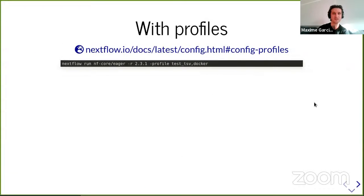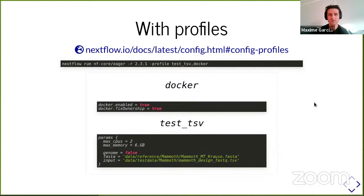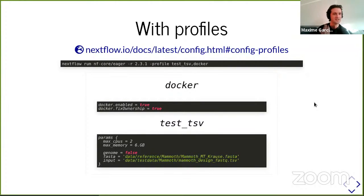The whole beauty about Nextflow is I can also use profiles to do the same thing. I can still have a look at the docs to see how it works. But basically, profiles are like aliases for configs. So here I'm using two profiles at once: a test TSV profile and a Docker profile. The Docker profile will get all the information for Docker. The test TSV profile will provide information for a small computer and also provide information for the input file and the reference genome. This profile is actually used very frequently, and since I don't want to type that all the time, it's in the config file.